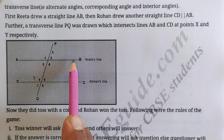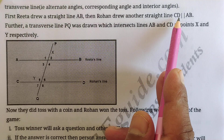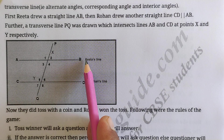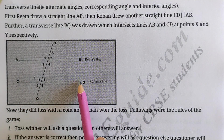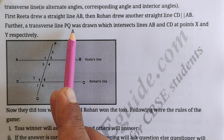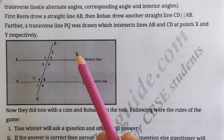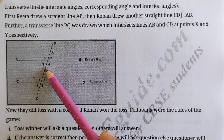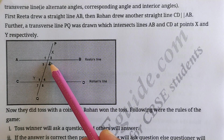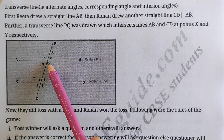First, Rita drew a straight line AB. Rohan drew another straight line CD which is parallel to AB. Then a transversal line PQ was drawn which intersects AB and CD at X and Y respectively. A transversal is a line that cuts other lines at different points — PQ is a transversal because it intersects AB at point X and CD at point Y.